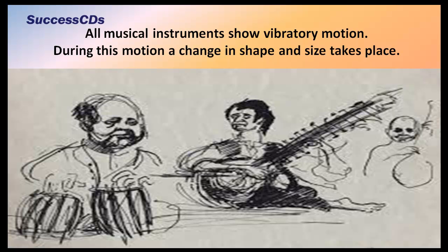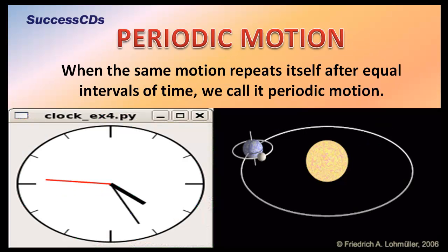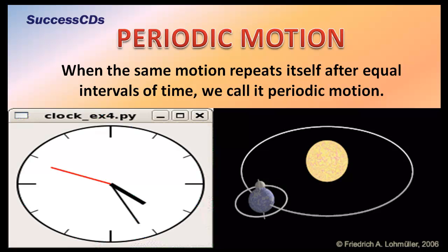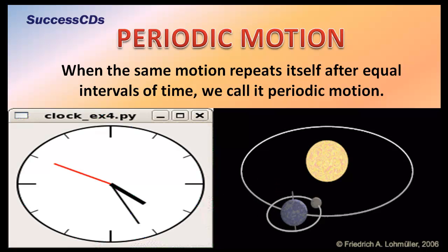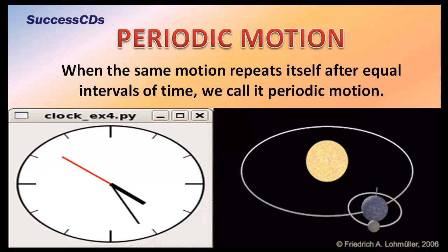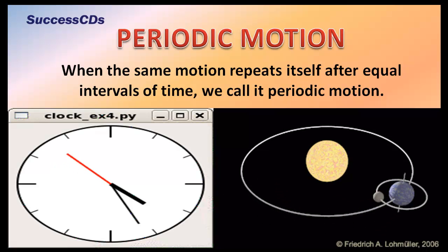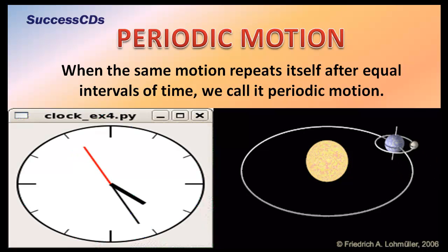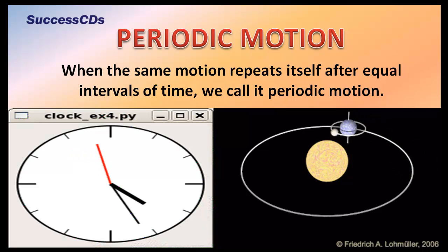During vibratory motion, a change in shape and size takes place. When the same motion repeats itself after equal intervals of time, we call it periodic motion — for example, the motion of the hands of a clock and the revolution of the Earth around the Sun.